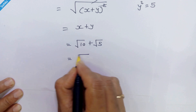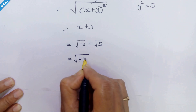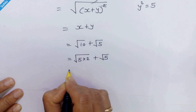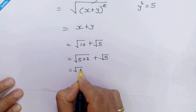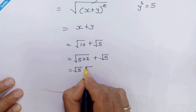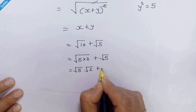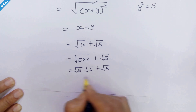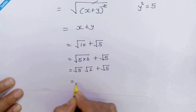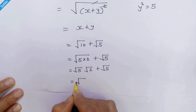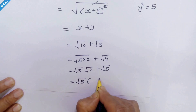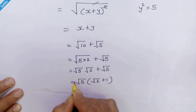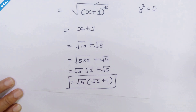We can still simplify further. We write square root of 10 as square root of 5 times 2 plus square root of 5. Taking square root of 5 as common factor, we have square root of 5 times (square root of 2 plus 1), and that's the answer. Thanks for watching.